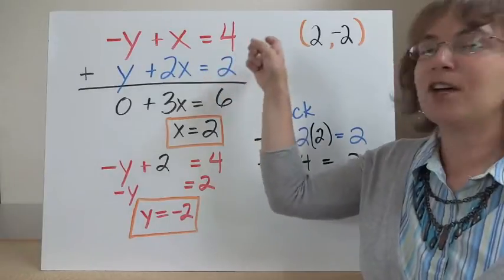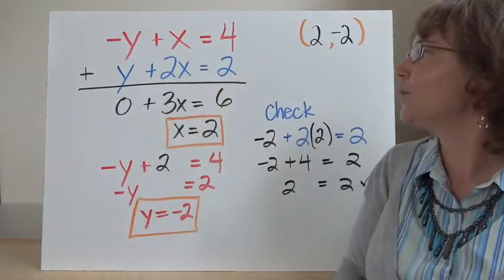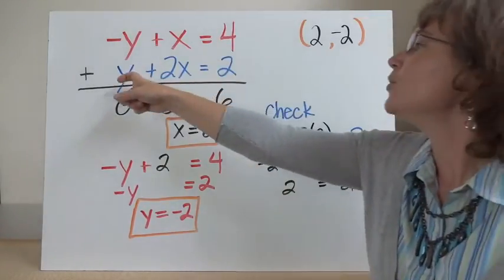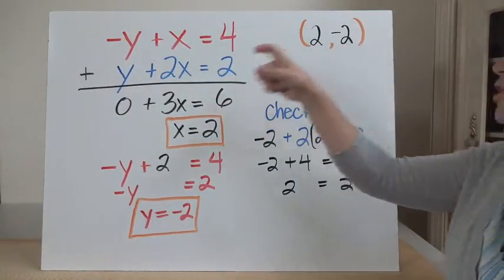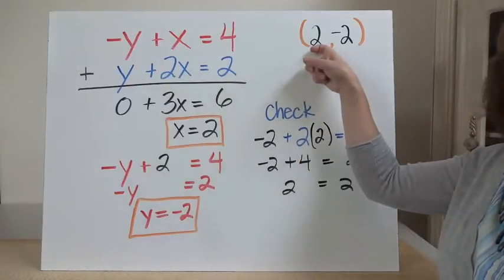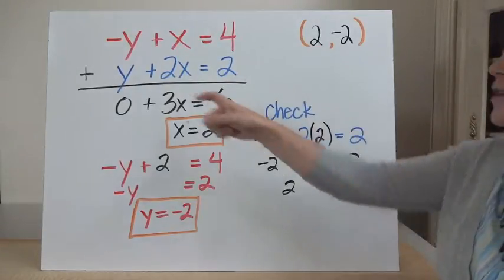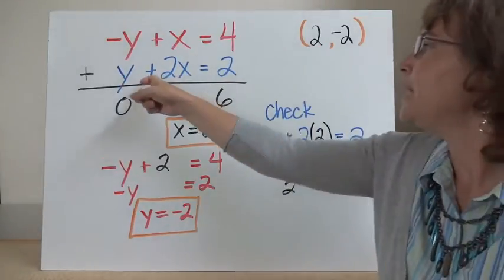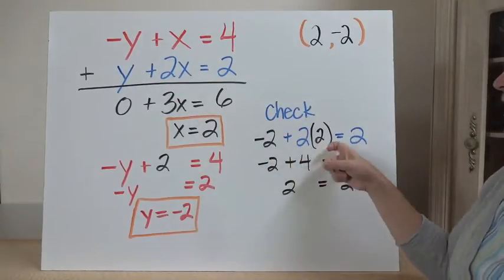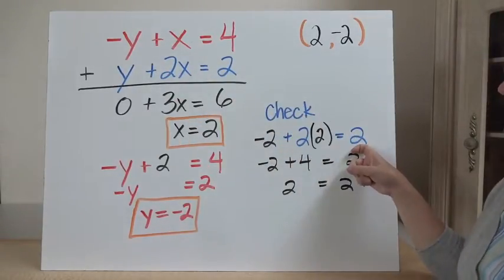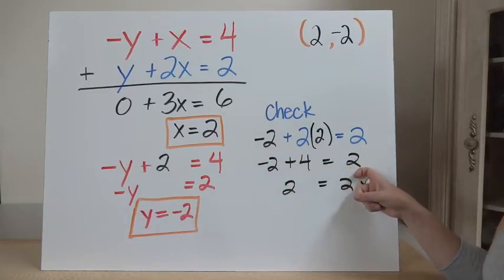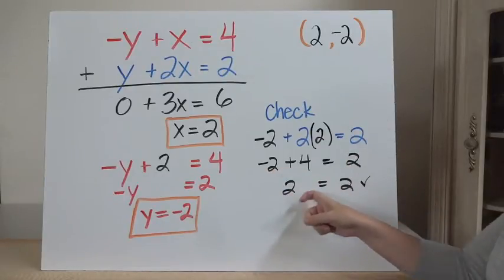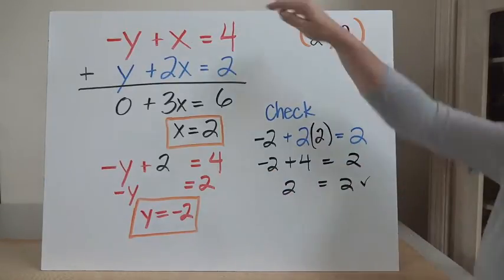Now I have my coordinate point at which these two lines cross. I can check that with my second equation that I didn't use to solve for y. So instead of y, I'm going to put negative 2, and instead of x, I'm going to put 2. So negative 2 plus 2 times 2 equals 2. Negative 2 plus 4 equals 2. Negative 2 plus 4 is 2, and that's equal to 2. It all checks out.